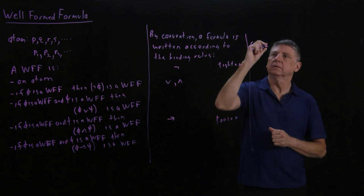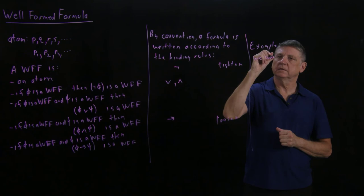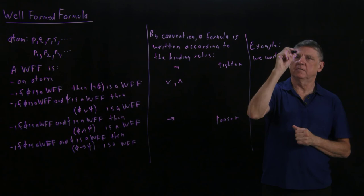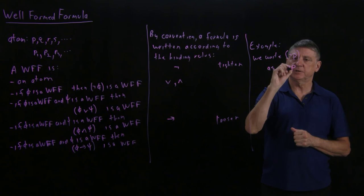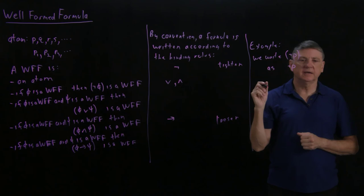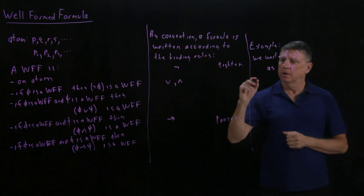So example, one example is we usually write, so let's suppose that we have the negation of P and we'll usually write this simply as negation P. That is, one of our conventions is that where the understanding is not changed, we'll drop the parentheses.